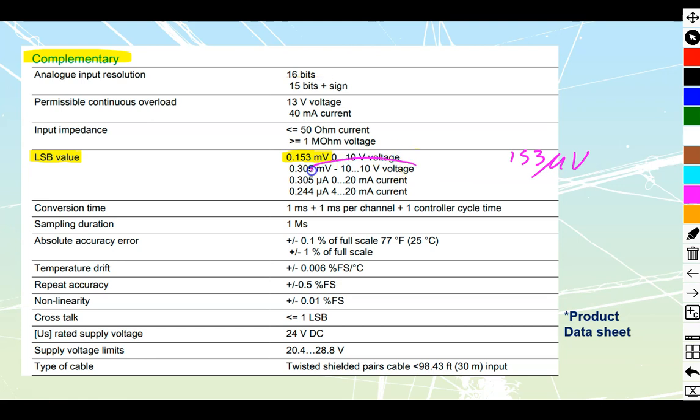If I spread it across the minus 10 through positive 10 volt, then it's going to roughly double and we're up to 0.305 of a millivolt, which is 305 microvolts. Very, very tiny amounts of voltage change that it's going to be able to pick up.